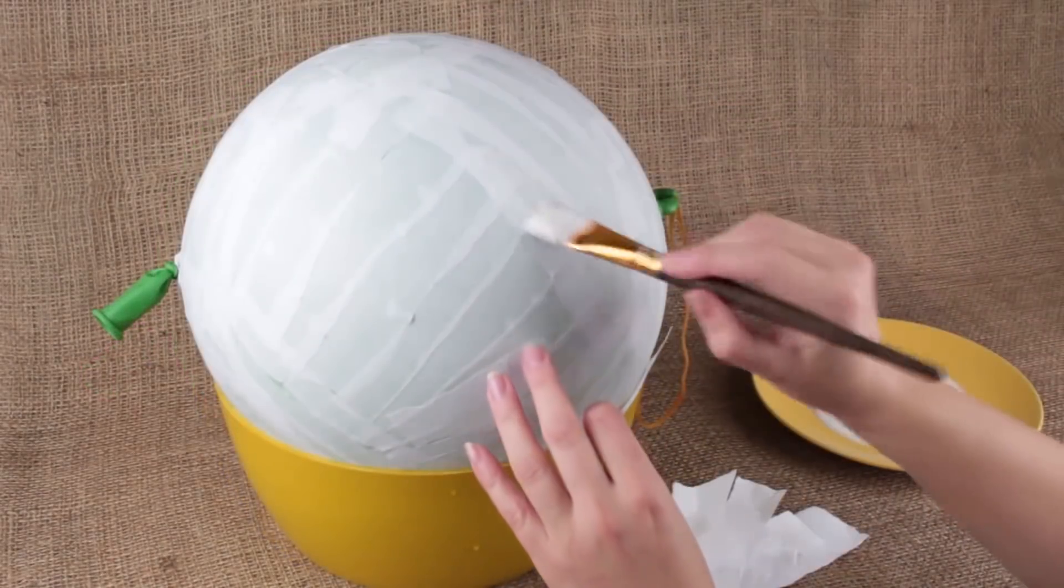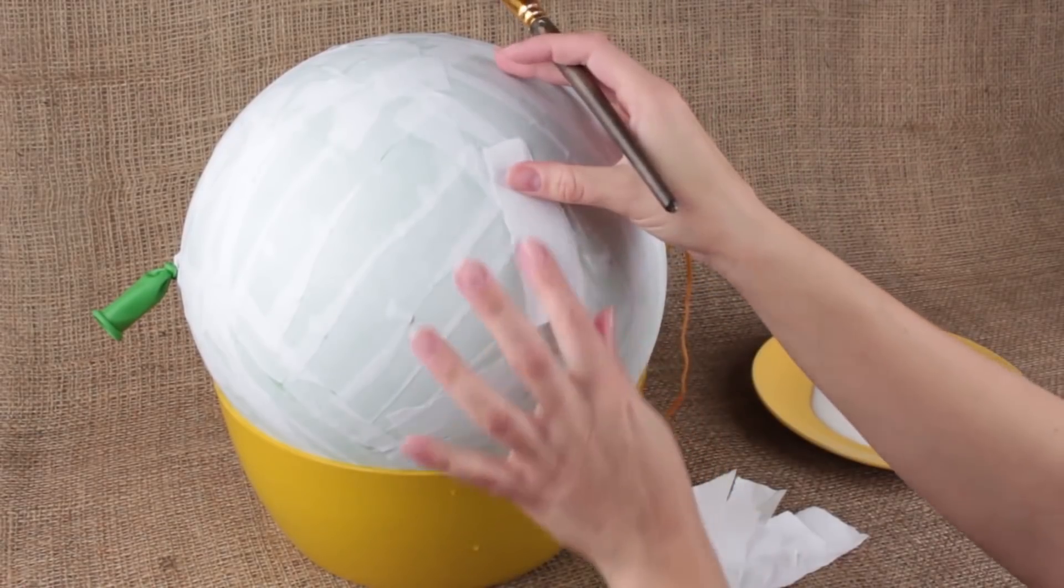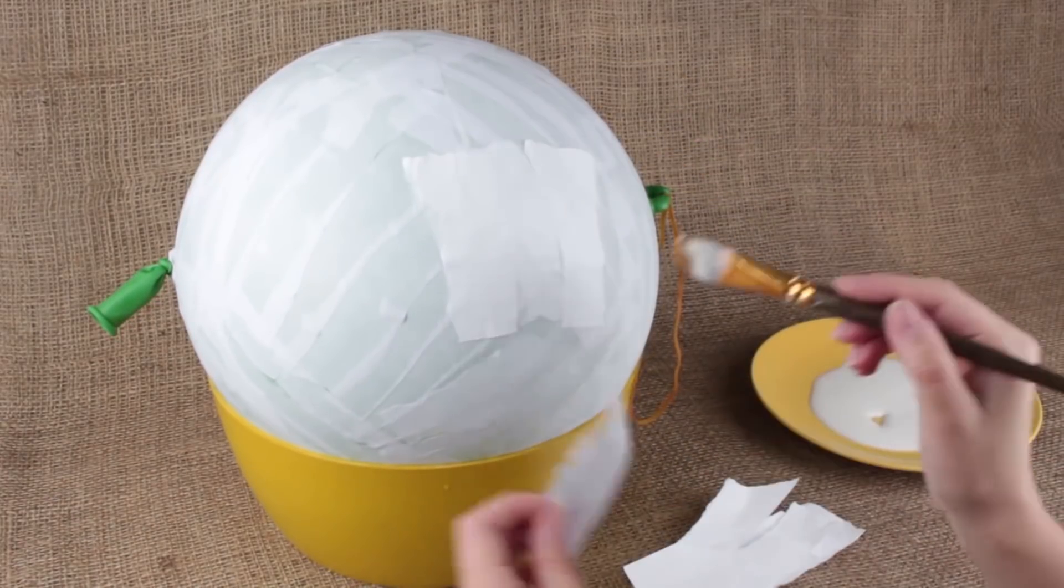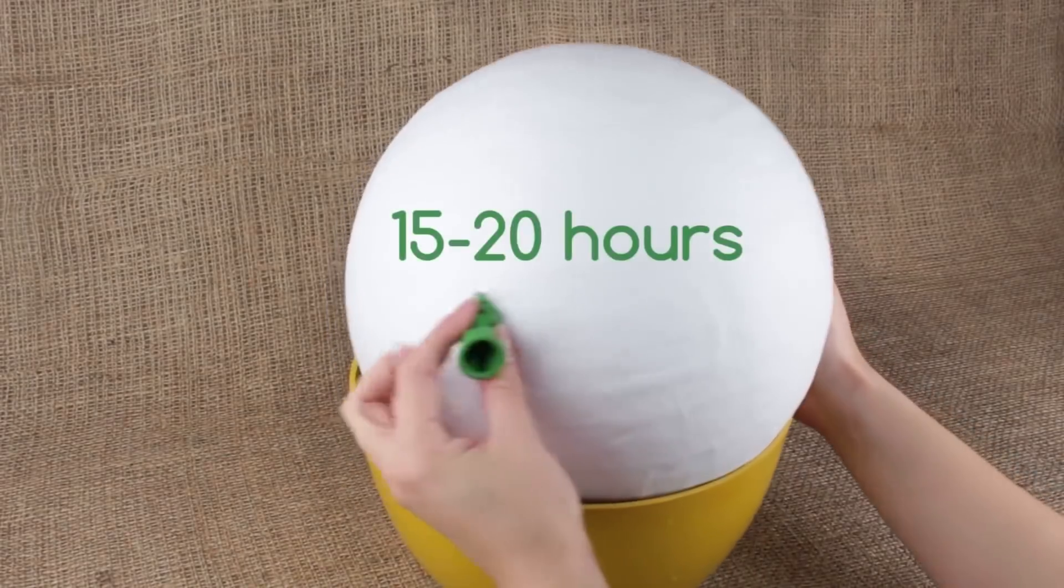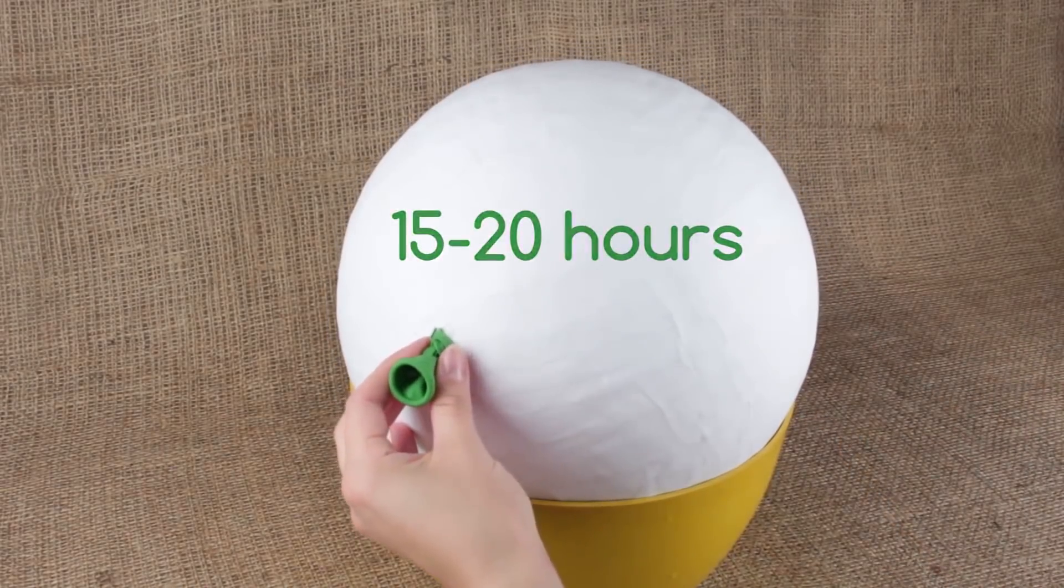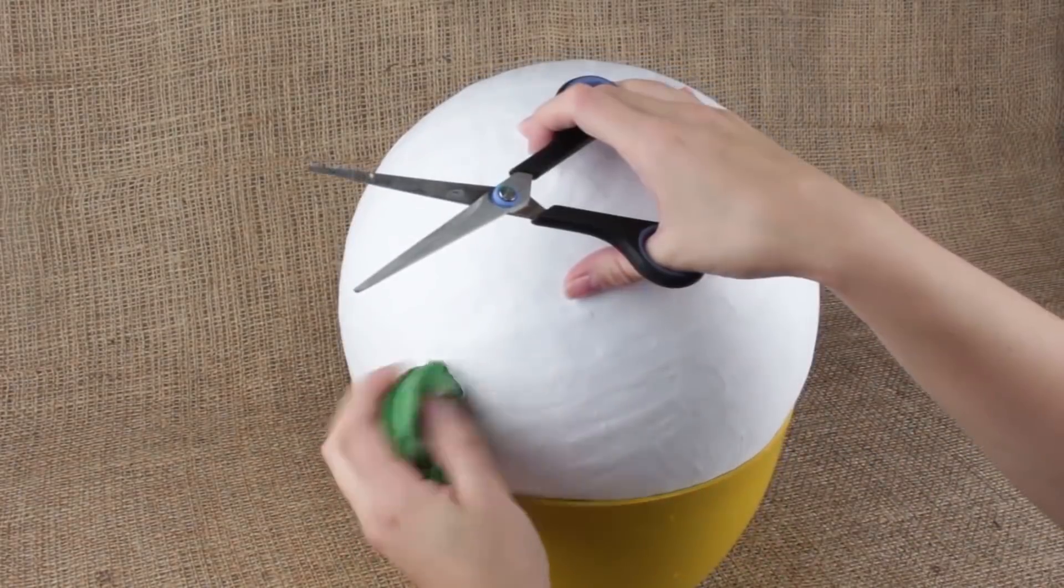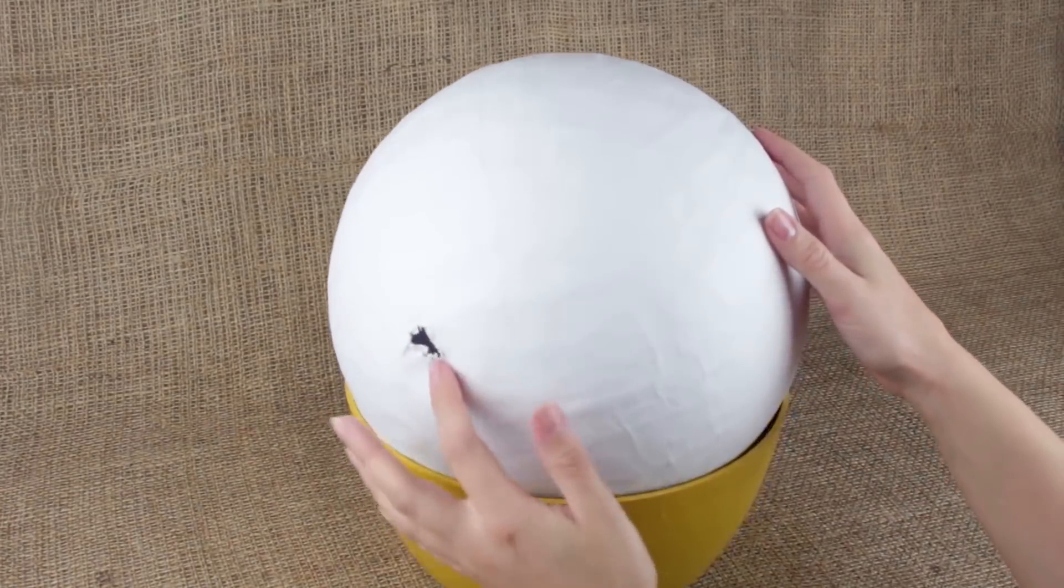We need to mix white glue with water for further coats. Take a soft synthetic brush. Cover three layers more to make the pinata keep its shape. It'll take about 15 to 20 hours to dry well. Cut off the end of the balloon. Pull it out. You can fill the pinata with sweets and candies through the hole and cover it afterwards.